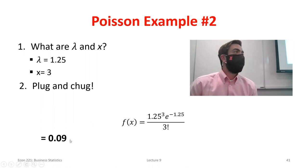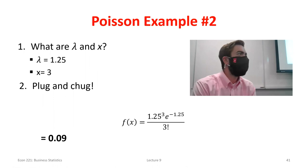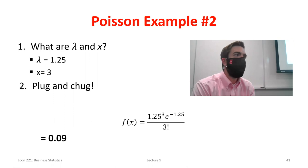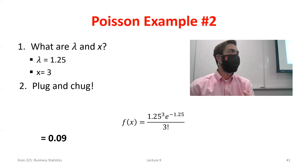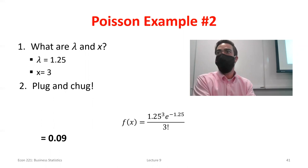Since the probability of seeing three births is 0.09, we know the probability of seeing five births would have to be even lower — we're moving further from the expected value of 1.25, so the likelihood falls. Think about it: if I typically see 1.25 births per hour, the likelihood of seeing 100 is essentially zero. Keep that in mind as we think about probabilities moving away from the expected value.